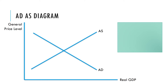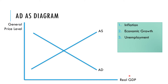We might look at how a change in the level of demand or supply impacts inflation by looking at the price level axis, or the impact on economic growth by looking at the real GDP axis. We can also examine changes in unemployment — if more is being produced, unemployment would probably fall — and the impact on the balance of payments in terms of how it affects aggregate demand and aggregate supply.